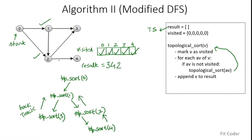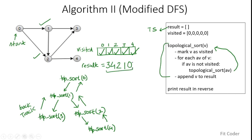Back at topological_sort(1), both adjacent vertices 2 and 3 are done. We append 1 to the result and backtrack to topological_sort(0). All adjacent vertices of 0 are done, so this function call completes. After this call, the result array contains 3, 4, 2, 1. The last step is to print this in reverse, giving 0, 1, 2, 4, 3 as the topological sort.